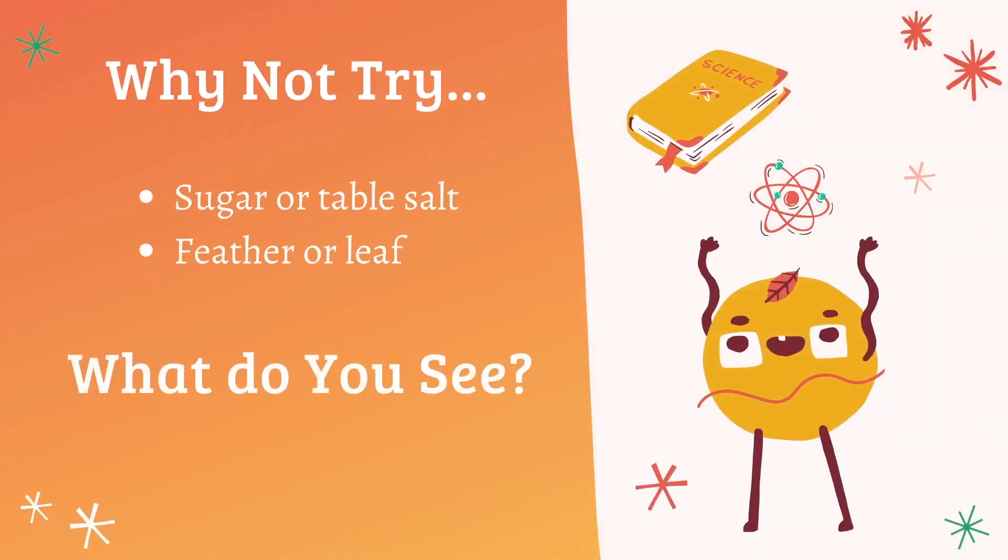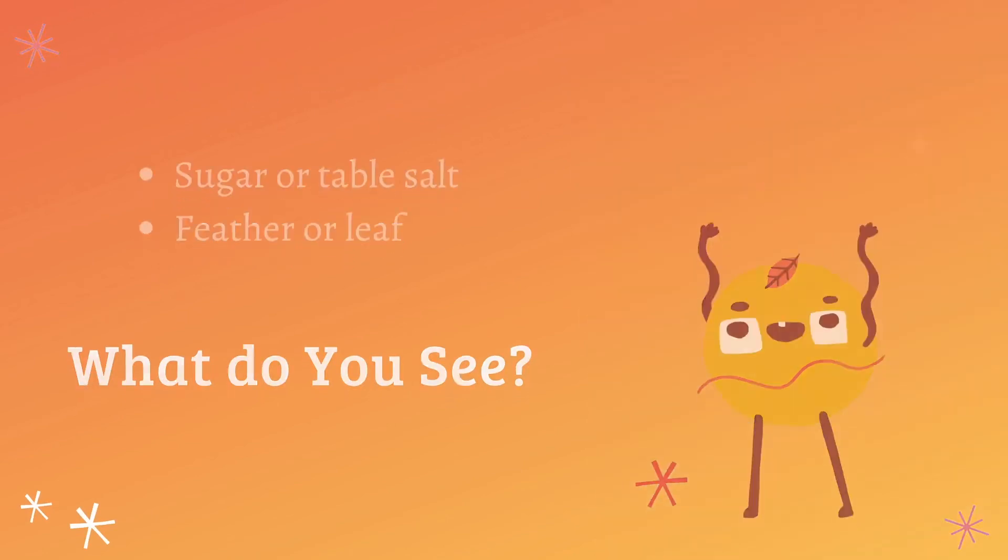After you complete your experiment, why not try changing some of the variables and see what you get. As mentioned before, you can use sugar, borax, or table salt instead of Epsom salt. Will you need more than six tablespoons? Try adding more. And do the crystals still look the same? Or instead of a pipe cleaner, try a feather or leaf. What happens? Do the crystals still form on these objects?